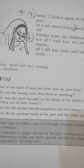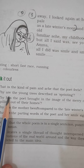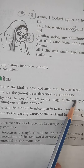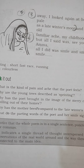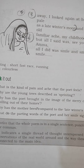Question number two: Why are the young trees described as sprinting? Answer: The car was moving when the poet looked outside at the trees. They appear to be sprinting because the car was speeding past them in the opposite direction. The young trees represented life in contrast to her mother's approaching death.